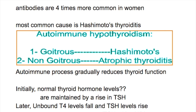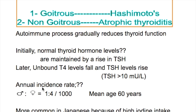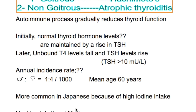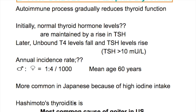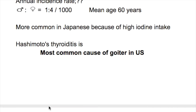How about the thyroid hormone levels in autoimmune thyroiditis? Initially, thyroid hormone levels are maintained at a normal level by a rise in TSH. But later, unbound T4 falls and TSH level rises. The annual incidence rate for male to female is 1 to 4 per thousand, mean age is 60 years, and it is more common in Japanese due to high iodine intake.